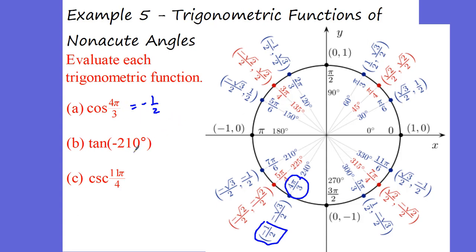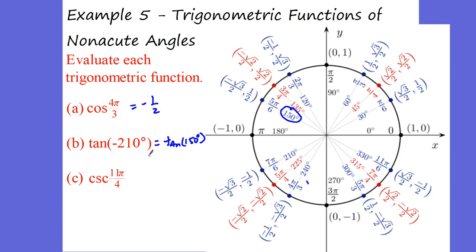Tangent of negative 210. We put that into a positive angle by adding 360: negative 210 plus 360, so we're really asking for tangent of 150 degrees. Let's find 150 degrees on the unit circle — it's right here. Remember, tangent is y over x. That's 1 half divided by negative root 3 over 2, giving us negative 1 over root 3, or negative root 3 over 3. That's the exact value of that function.